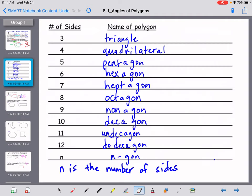Here are some names of polygons and it's really important that you know these names because you might have problems that refer to your polygon being a decagon. What's a decagon? Well, it's a polygon that has ten sides. So you've got to be able to know these names. Three sides is triangle, four is quadrilateral, five is pentagon, six is hexagon, seven is heptagon, eight is octagon, nine is nonagon, ten is decagon, eleven is undecagon, and twelve is dodecagon.